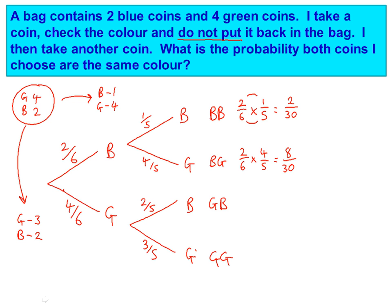Next one. We're going down this time, so we're using this probability, four out of six. And then up to blue, so we're using two out of five. So it's four out of six times two out of five. Times the tops, four times two is eight. Times the bottoms, six times five is 30.